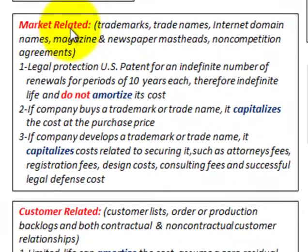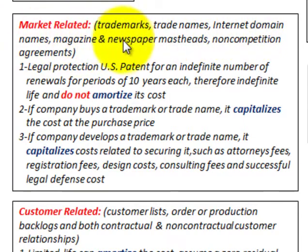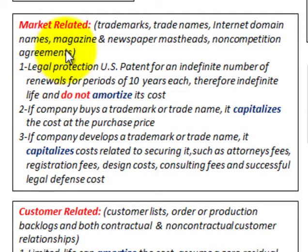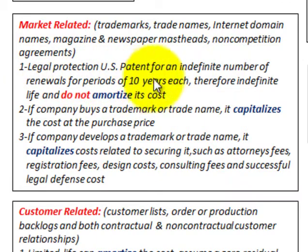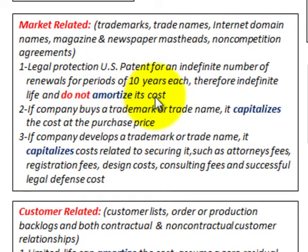Starting with market-related intangible assets: those would be trademarks, trade names, internet names, magazine, newspaper mastheads, and non-competition agreements, among other things. Number one, they receive legal protection through the United States Patent Office for an indefinite number of renewals for periods of 10 years each. Therefore, they are indefinite in life and do not amortize their cost.